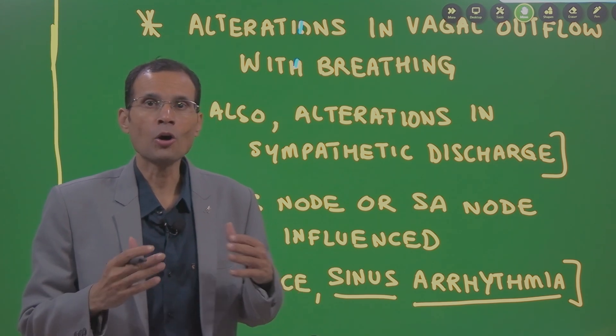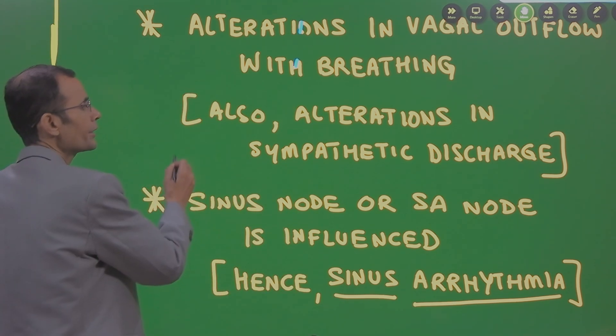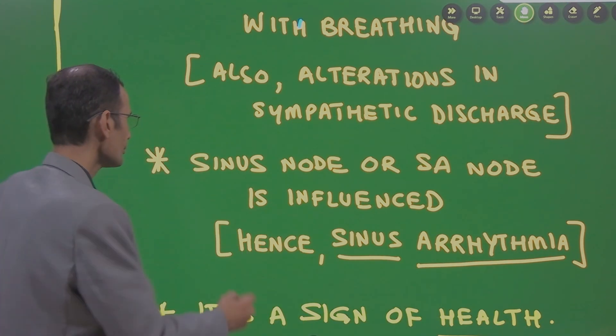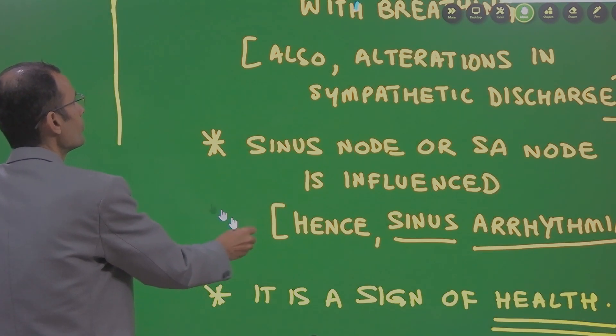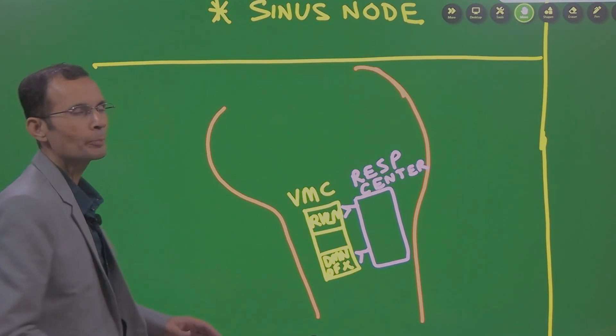These alterations occur with respiration and therefore, heart rate or heartbeat rhythm is altered. Now, why it can happen? Just a simplistic diagram.